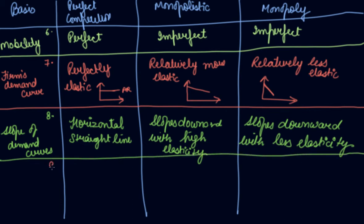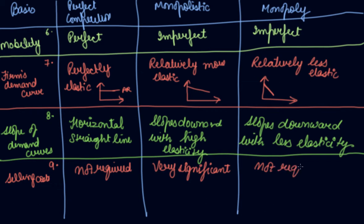The ninth difference we can have is selling cost. Not required in perfect competition because these are homogeneous products and the price is also the same. Very important, very significant in monopolistic competition. Not required in monopoly because there is no need for selling cost.